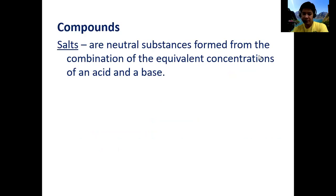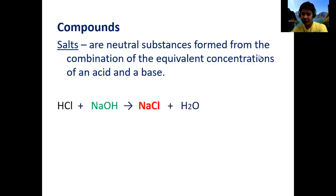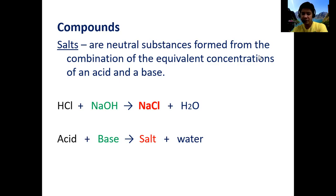Salts are neutral substances formed from the combination of equivalent concentrations of an acid and a base. They are produced by the reaction between acid and base, which we call neutralization. In a neutralization reaction, the acid and base produce two products: salt and water. For example, when hydrochloric acid (HCl) combines with sodium hydroxide (NaOH), they form sodium chloride (NaCl) as the salt and water as a byproduct.